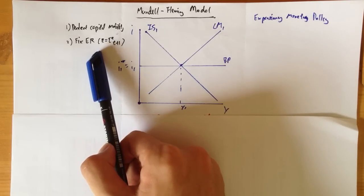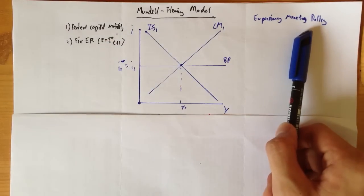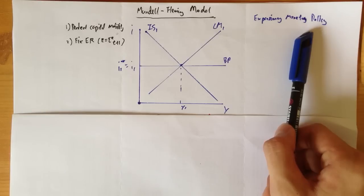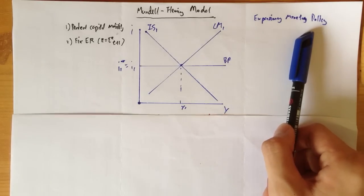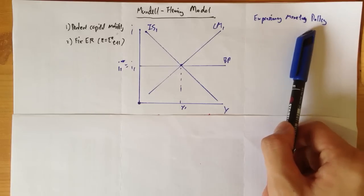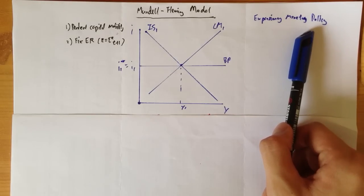I'm going to examine two kinds of different policy. The first one being the expansionary monetary policy. The second one is the expansionary fiscal policy, which I'll cover later on. We're going to examine the effects of whether each policy is effective in increasing the output of the economy.